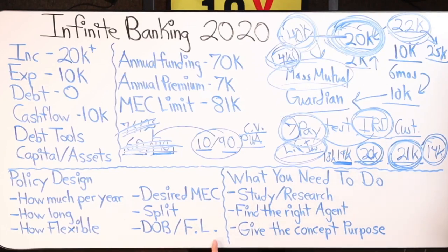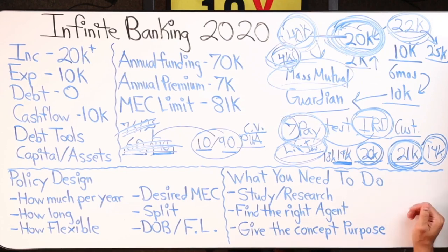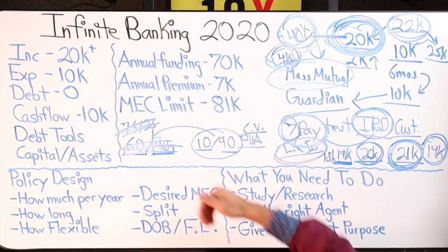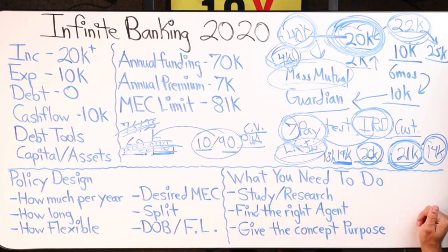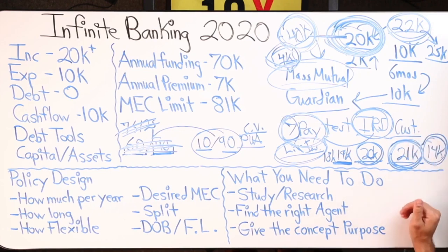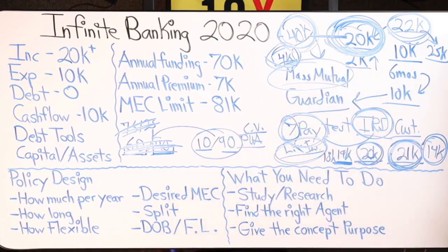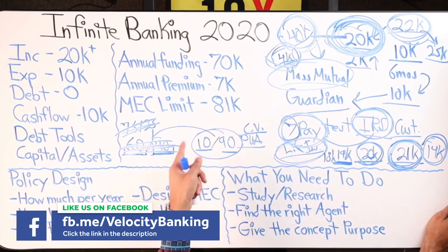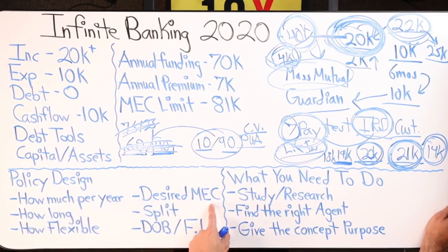Coming back to the board: date of birth, first and last name. So let's say I'm your agent — you've done your studying and research, you've watched my videos and IBC Global's channel which is another great resource on the infinite banking concept. You understand the concept well enough to have an intellectual conversation. You give the concept purpose — maybe you want to invest in real estate, start your own business, or sell the product yourself, maybe become an agent. You can send me an email at denzel@buildertocontributor.com with your date of birth, first and last name, desired split — I almost always recommend 10/90 — desired MEC limit, how much per year, and how long.